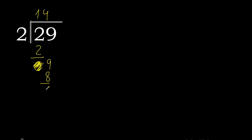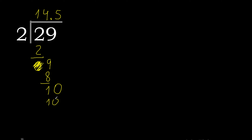Subtract. There is no number that goes down. Therefore, complete — always complete with 0, and here with a point. Point only once. 2 multiplied by 5 is 10. Subtract. 0, and there is no number that goes down.